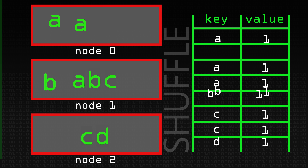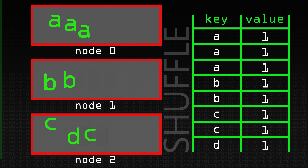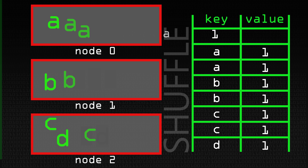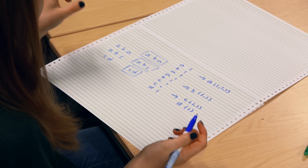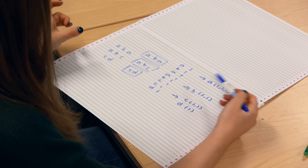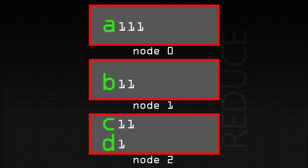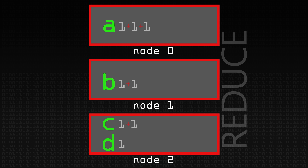After the shuffle, on the first node we have A with values 1, 1, 1. On the second node we have B with values 1, 1. And on the last node we have C with values 1, 1 and D with value 1. The Reduce phase then returns a single value for each key by combining all the values associated with it — using a plus operator. So the final result is A3, B2, C2, and D1.